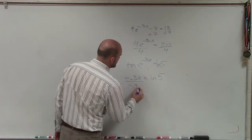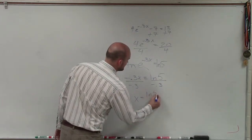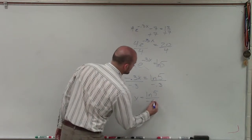Divide by negative 0.3. And therefore, x equals ln of 5 divided by negative 0.3.